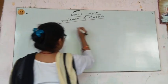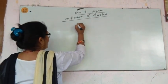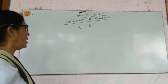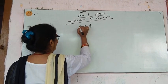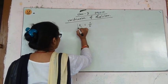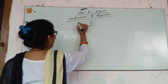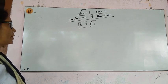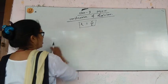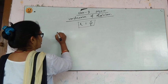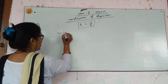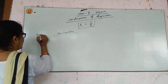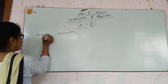Ohm's law gives the relation between potential difference, current, and resistance. From Ohm's law we can find the value of resistance. Without verification, any law cannot be applicable, so first you learn about its verification. It is verified by experiment — that is, experimental verification of Ohm's law.